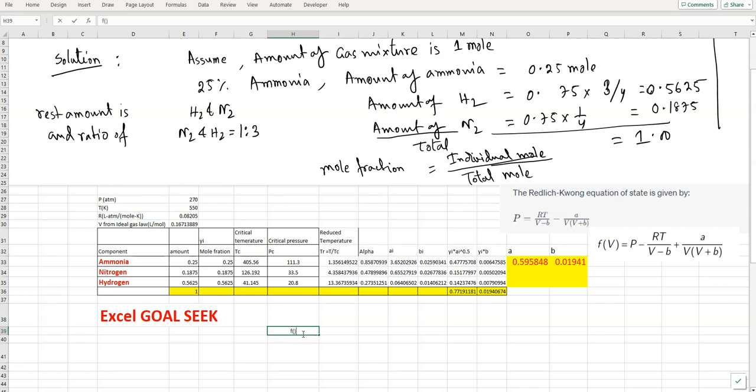We need to calculate f(V). For the V value, I'm taking an assumed value from the ideal gas law. I'm going to calculate that and then use it. This is our b value. Now I'm going to calculate f(V).